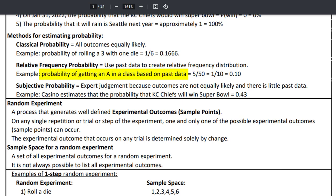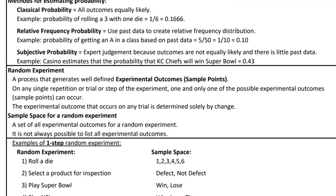For example, probability of getting an A in a class based on past data: 5 out of 50 got A's, so the probability is 0.10. Subjective probability is when you use expert judgment because outcomes are not equally likely and there's little past data. When a casino estimates the probability that KC will win the Super Bowl at 0.43, they're using their best judgment — it's really subjective.